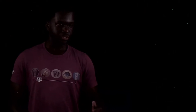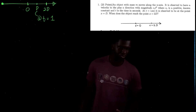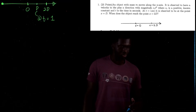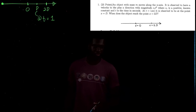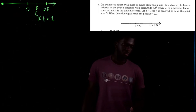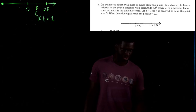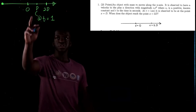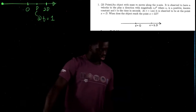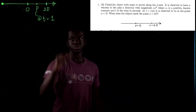Let's get started. So the first question is, an object with mass m moves along the x-axis. It is observed to have a velocity in the plus x direction with magnitude c1t squared, where c1 is a positive known constant and time is in seconds. At t equals 1 second, it is observed to be at the point x equals d.